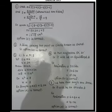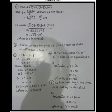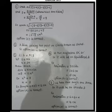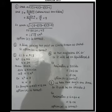Question number 2: for the figure given in the book, we have to identify AB drawn in the circle. AB is a chord. So option A is correct.